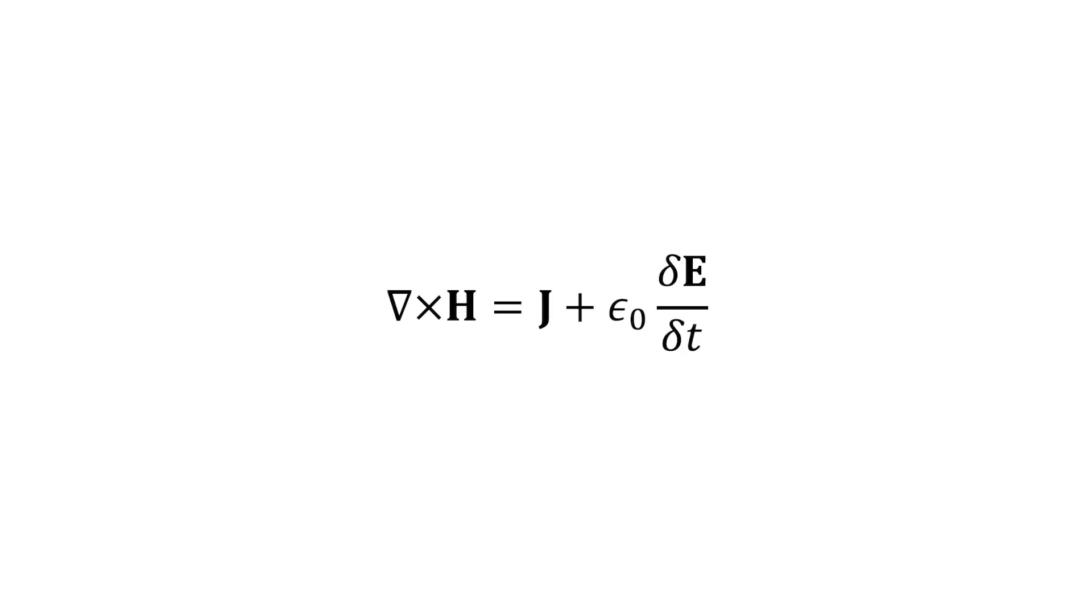This equation holds for every point in space. H is the magnetic field. J is the current density flowing through a wire, for example. And E represents the electric field at that point in space.